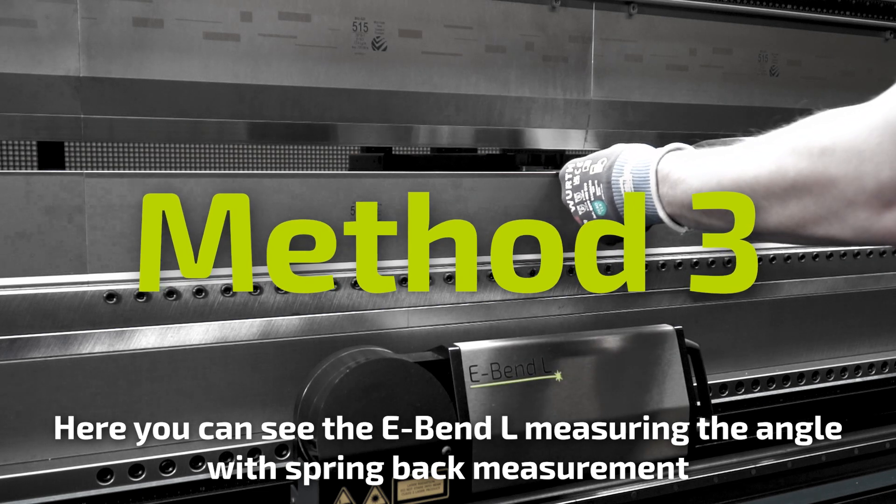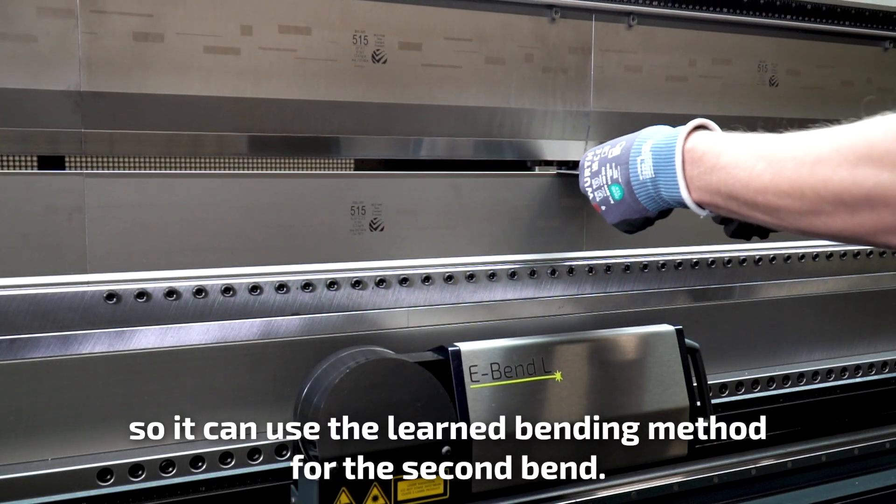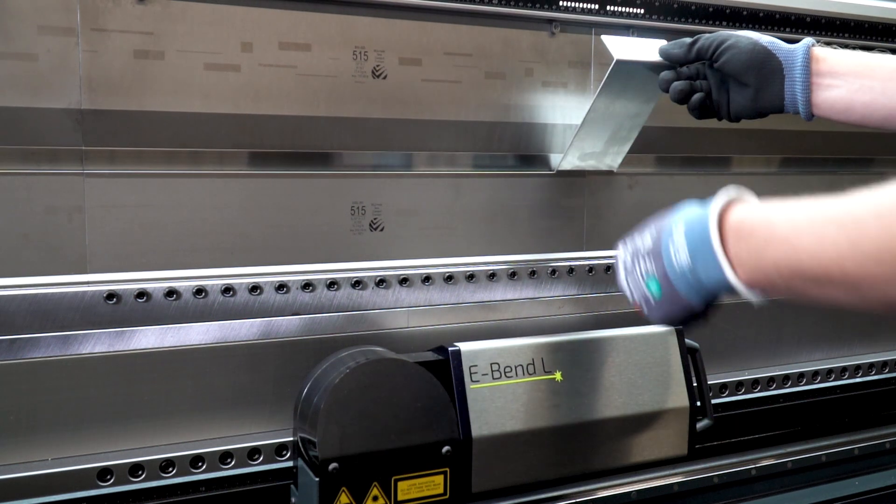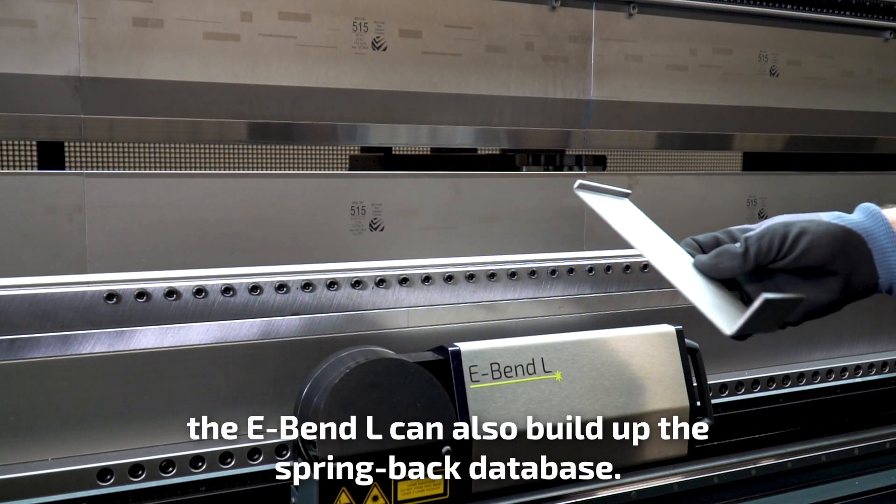Here you can see the E-Bend L measuring the angle with spring back measurement, so it can use the learned bending method for the second bend. While using this method, the E-Bend L can also build up the spring back database.